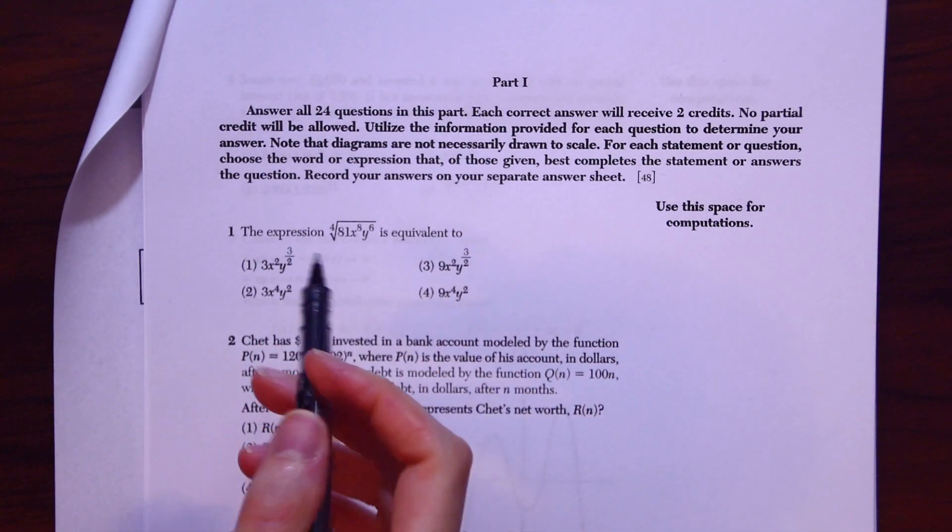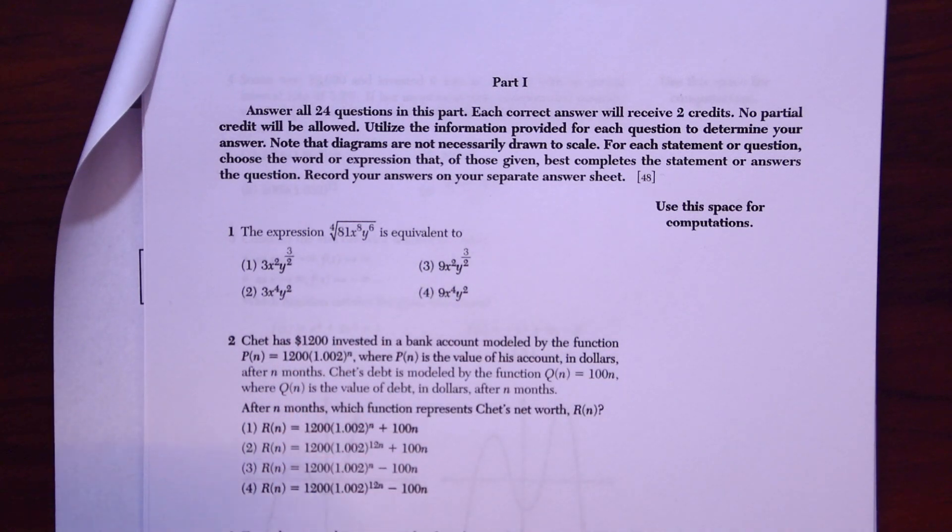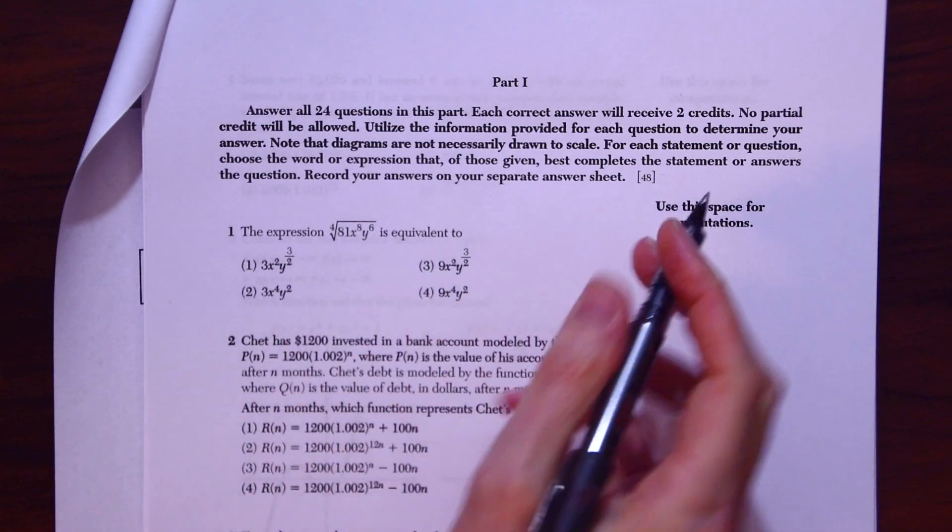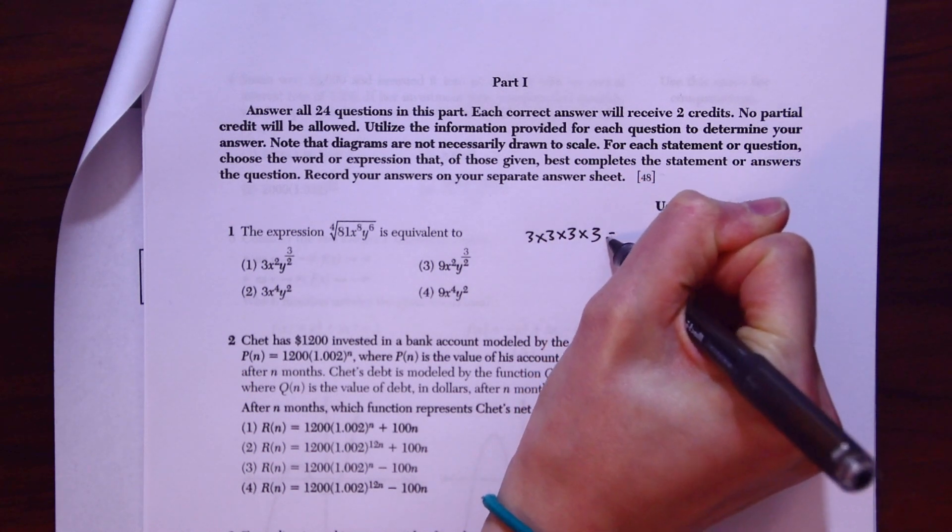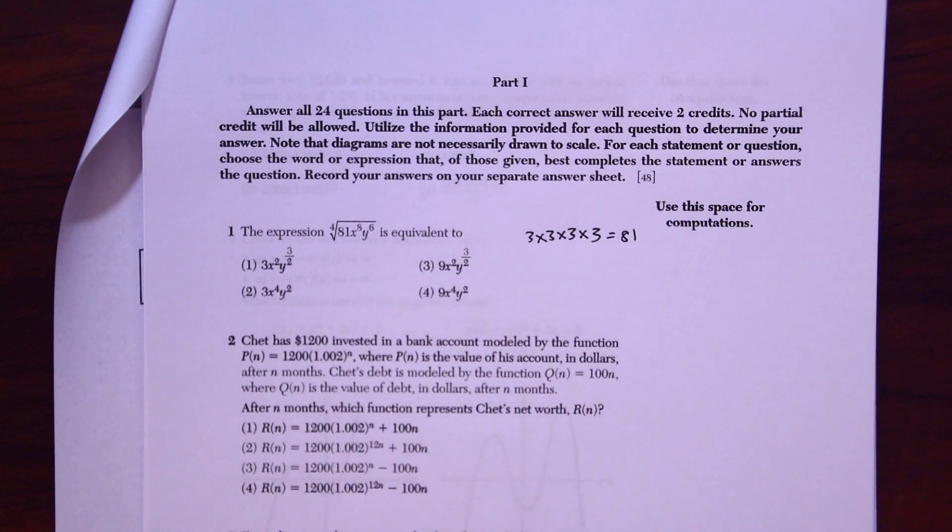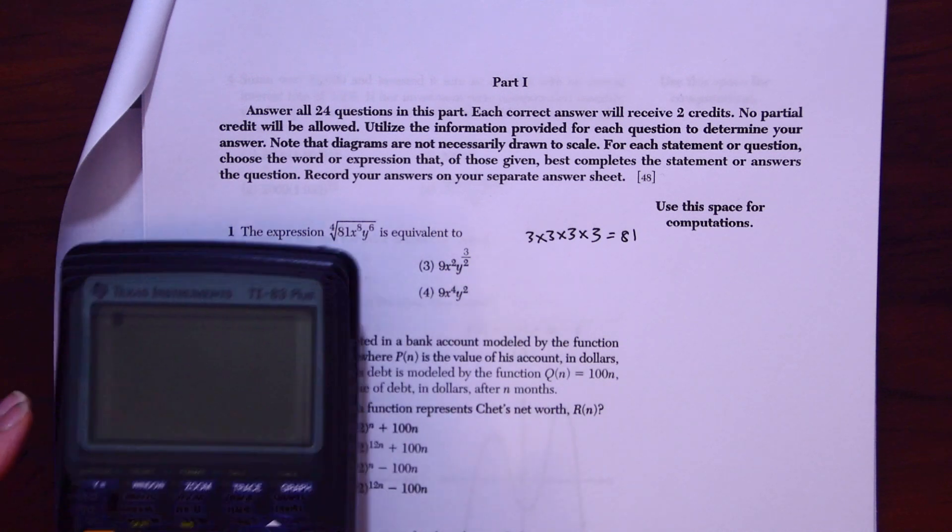we're going to take the quad root of each of these terms. You can just see that 3 times 3 times 3 is equal to 81. So you might just know that or you can use your calculator to plug that in.